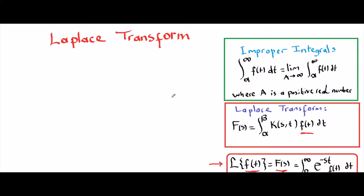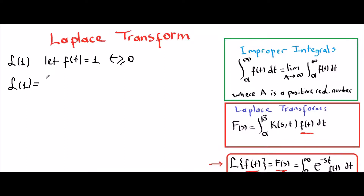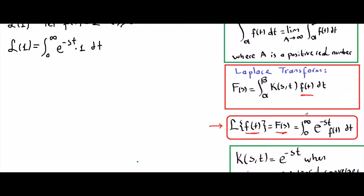Let's begin with taking the Laplace of constants. Let's take Laplace of 1 — we use the curly L for Laplace. Since we are taking the Laplace of 1, let f(t) equal 1, and t is greater than or equal to zero, or else our improper integral diverges. I recommend you review improper integrals — I have a detailed video about them. The definition of Laplace transform gives us the integral from zero to infinity of e to the negative st times 1 dt.